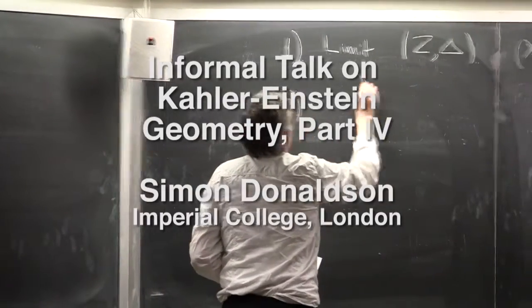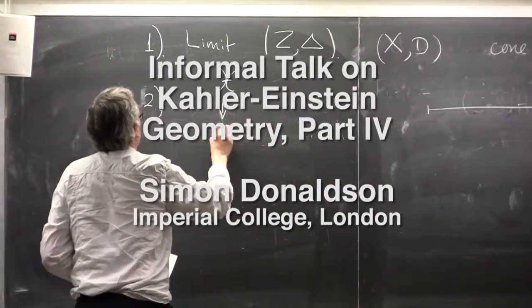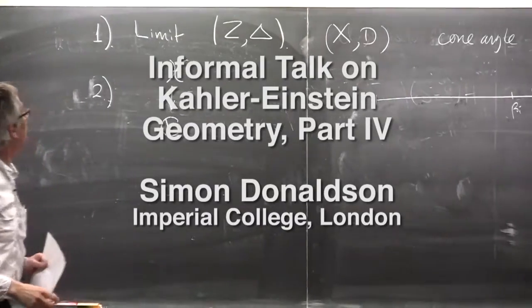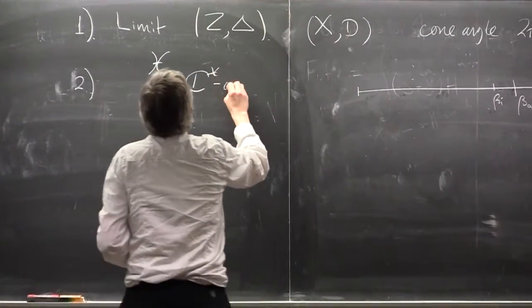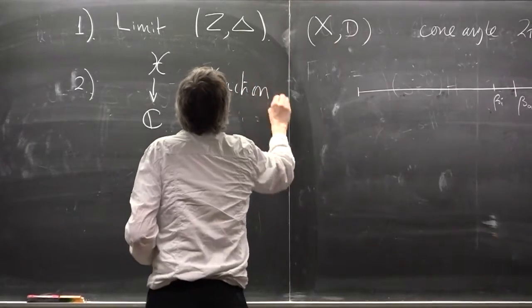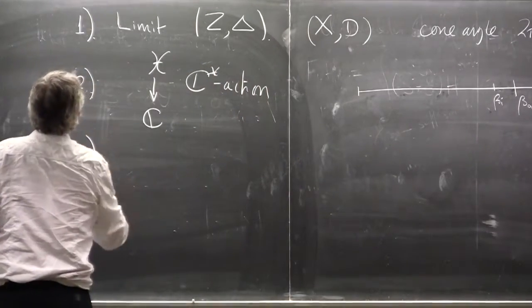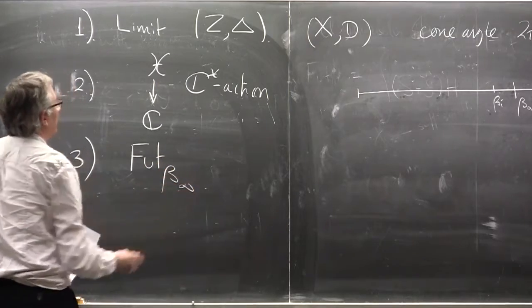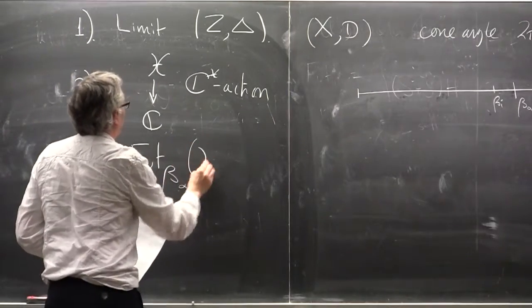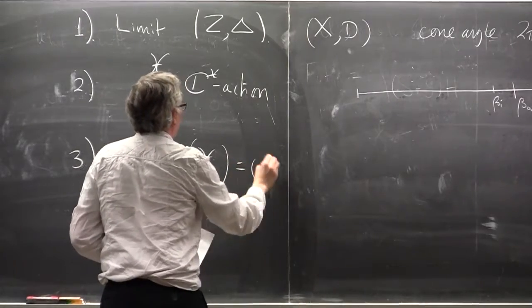As the central fiber of a family, we put the c-star action as in the definition of stability, and then we want to argue that the Futaki invariant for this limiting value of this thing is zero.